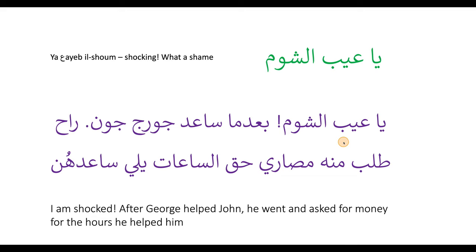Ya'ayb shum means what a shocking behavior. In the example: After George had helped John, he went and asked him for money for the hours he had helped with — bad ma sa'ad George, John raah talab minno masari haq al-sa'at. Ya'ayb shum. Ya'ayb means shame and shum refers to behavior.